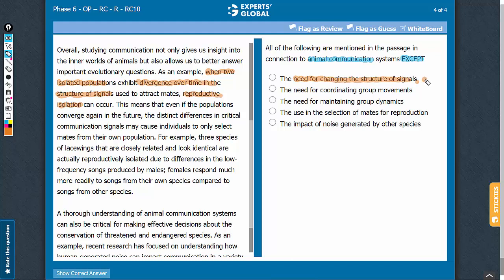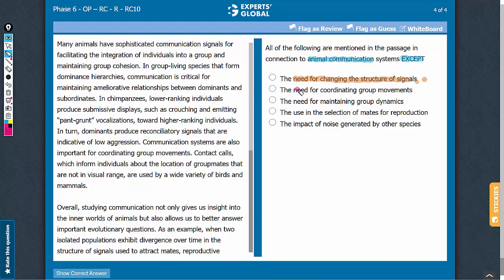Answer choice B: Need for coordinating group movements. The passage mentions in the first paragraph that contact calls are used to know the locations of group members, so this answer choice is mentioned in the passage. Let's eliminate this answer choice.